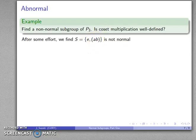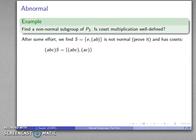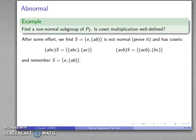And after some effort we find this one consisting of E and the transposition AB. Turns out that's not normal and it has cosets (abc)S and (acb)S. So here's the cosets, and since S itself is {E, ab}, our group P3 has been partitioned into 1, 2, 3 cosets. So let's see what happens.